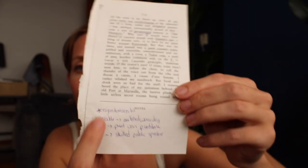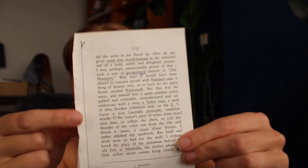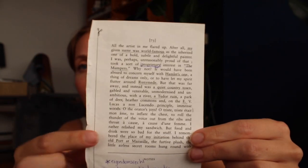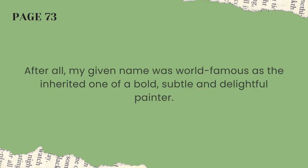The next page is page 73. I had to translate some words because I didn't know them, and honestly this page gave me so many more questions than answers. I didn't know what half the things meant — half of it was just baffling and the other half I was guessing at connections. Let me give you the main ones. The first clue is: 'My given name was world famous as he inherited one of a bold, subtle and delightful painter.' I Googled it and got Augustus John.